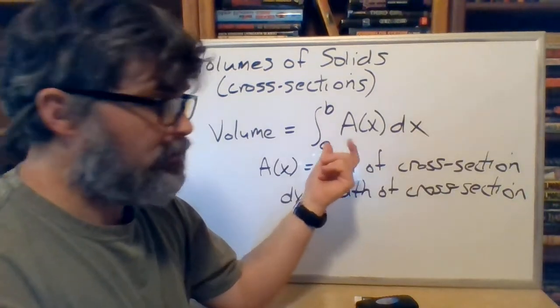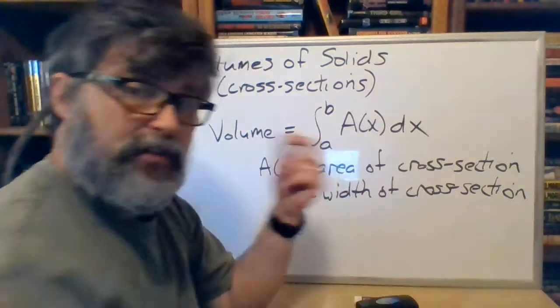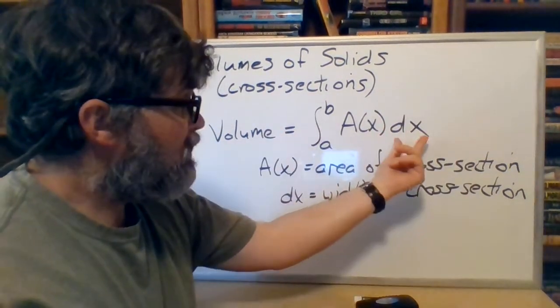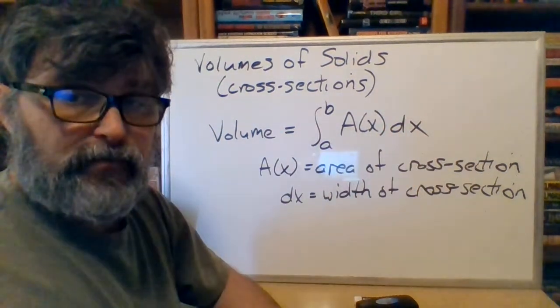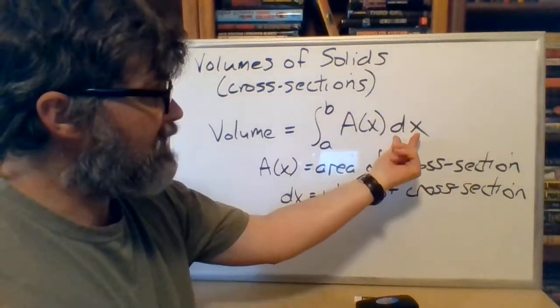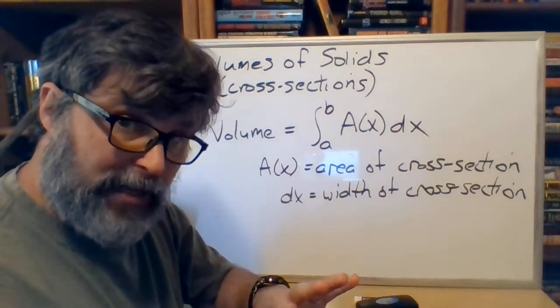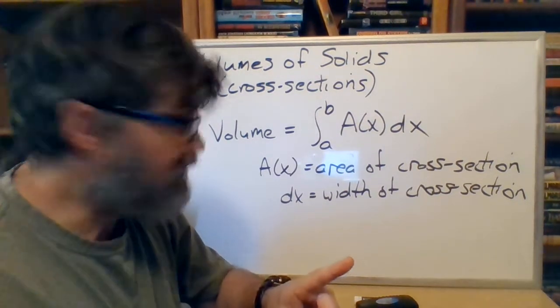So you find an area by going, what, length times height? And then width would give you a third dimension. So that's actually volume, that we're taking over a certain distance along the x-axis. So we're having a certain number of widths. Relax, if that doesn't sound great so far, we'll get to more.